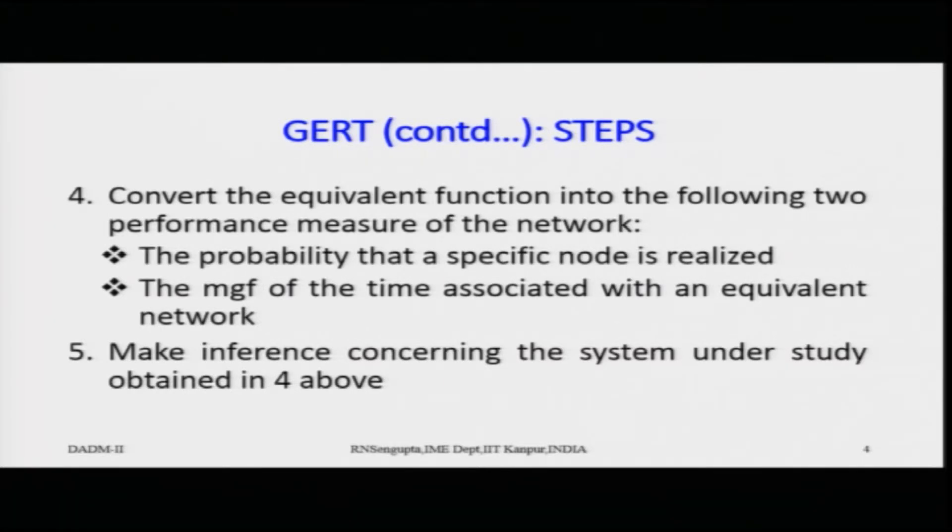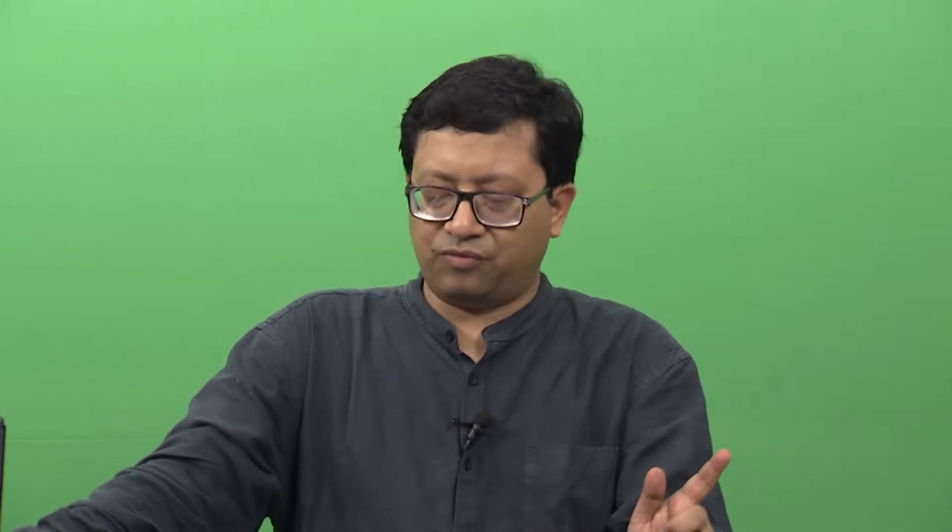In step four you convert the equivalent functional form into two performance measures of the network. One is the probability that a specific node is realized along with the time period for realization. The other is the moment generating function of the time associated with an equivalent network, from which you can find the average time, variance, and expected value — giving a complete picture of the network from a time perspective, including looping paths.